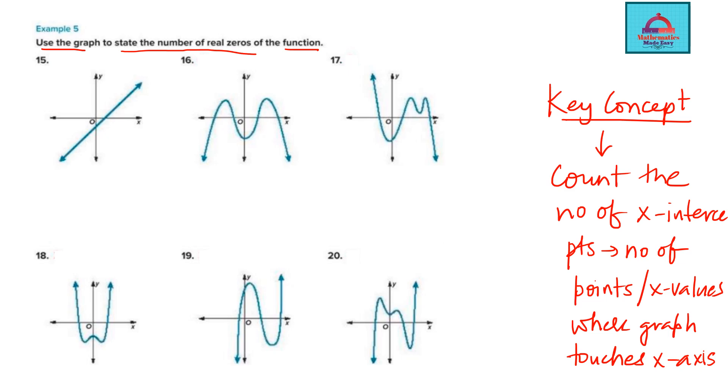Let's look here. This is the blue graph, it looks like a straight line. This graph is crossing the x-axis at only one point, so how many real zeros will this have? One real zero. That's question 15 for you. Just count the number of times the graph is touching or crossing the x-axis.